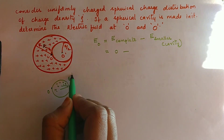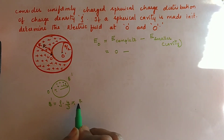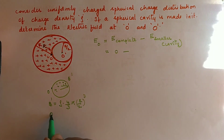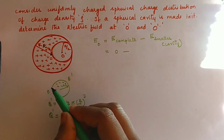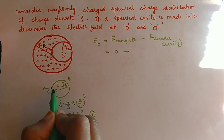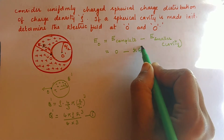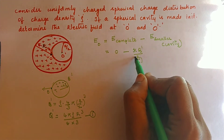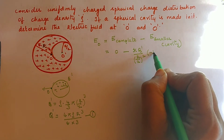Let the charge on the smaller sphere be q'. We have q' = rho × (4/3)π(r/2)³ = 4π rho r³ / 24. Since O is on the surface of this smaller sphere, the field at O due to it is E = (1/4πε₀) × q' / (r/2)², directed in the negative x-direction (minus i-cap), since the smaller sphere is positive.